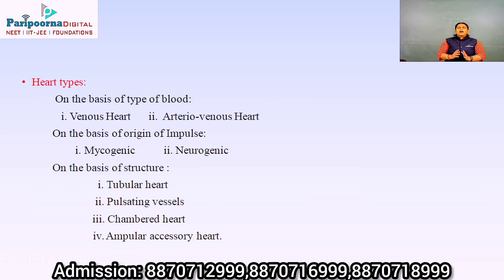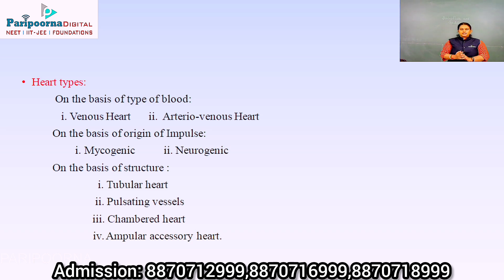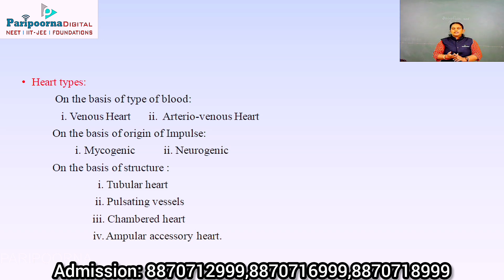Next we look at the types of heart. One classification is based on the type of blood received by the heart. A venous heart receives only deoxygenated blood. An arteriovenous heart receives deoxygenated blood from the body and supplies oxygenated blood from the lungs to other parts of the body — this type is found in all amphibians.